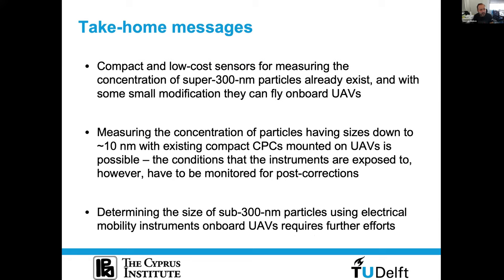Key takeaway messages: To measure large particles above 300 nanometers, low-cost miniaturized OPCs work well — you only need to modify them to ensure constant flow rate. To measure number concentration down to 10 nanometers, CPCs can be used, but you must carefully report the temperature and pressure conditions. For sizing sub-300 nanometer particles, more effort is needed to build instruments that accurately report size at low pressures and low temperatures. Thank you for your attention.